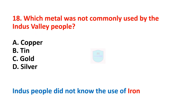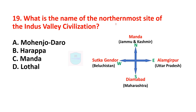Next question: which metal was not commonly used by the Indus Valley people? Correct answer is iron. Iron was not commonly used; the Indus people did not know the use of iron. Next question: what is the name of the northernmost site of the Indus Valley Civilization? Correct answer is Manda, Jammu & Kashmir. The southernmost site was Daimabad, Maharashtra; the easternmost site was Alamgirpur, Uttar Pradesh; and the westernmost site was Sutkha Jinder, Balochistan, Pakistan.